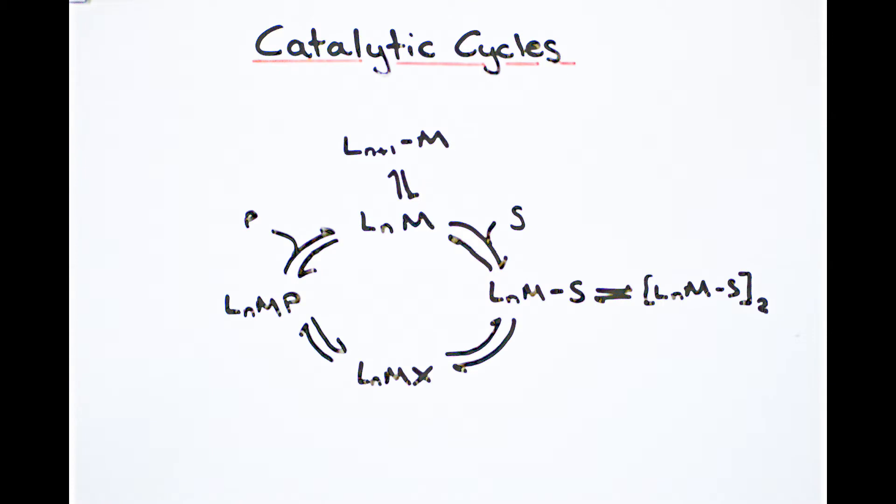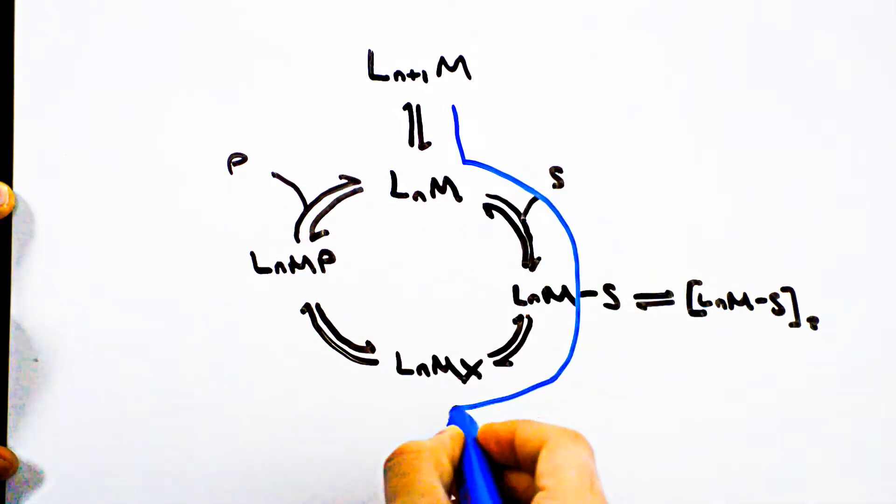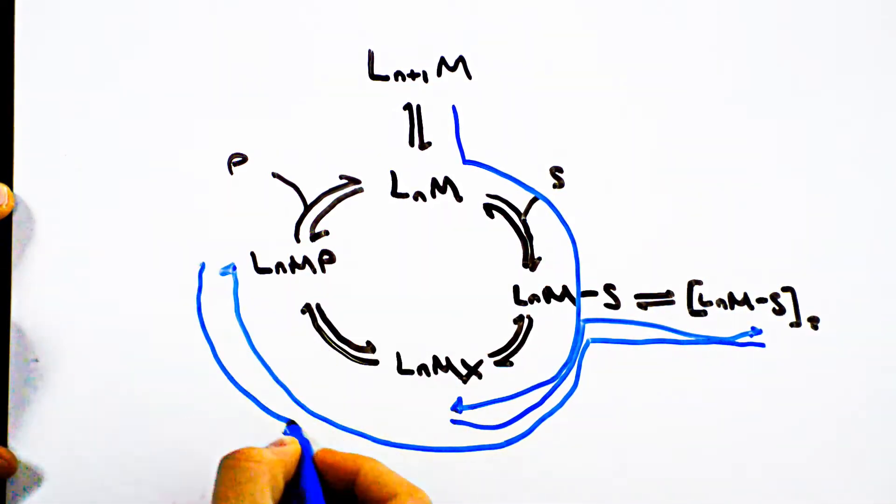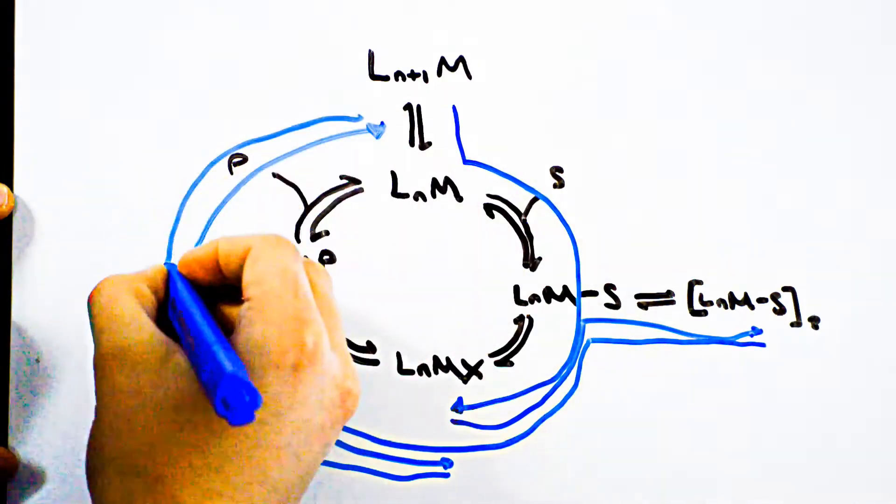A key point to mention is that all of the reactions in this cycle are in equilibrium. This means that the pathway for a molecule is not so straightforward. There are ways we can manipulate this though.